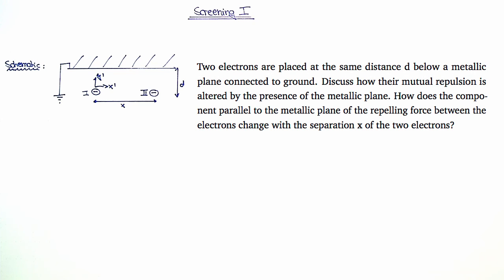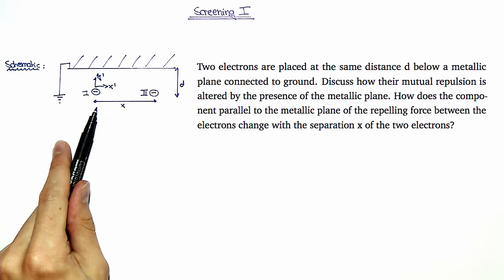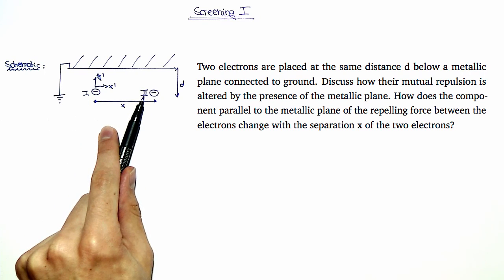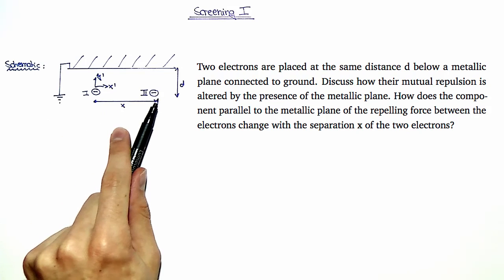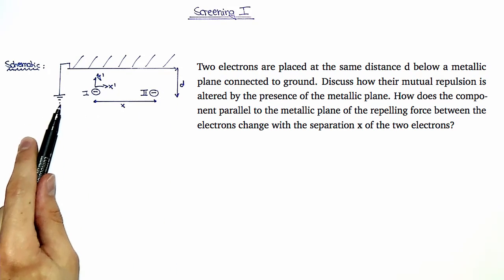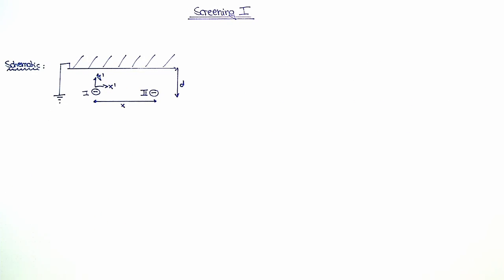In the problem set we are given a schematic that looks like this. Two electrons labeled as 1 and 2 that are at a distance x from each other are at a distance d from a grounded metallic plane. We have to calculate the component of the repelling force of the electrons along the x-prime direction in the presence of the grounded plane.